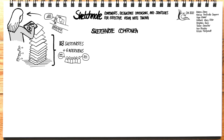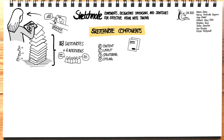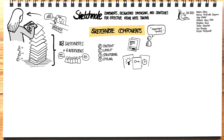Sketchnotes are composed of elements in four categories: content, layout, structuring, and styling. The level of detail of written text ranges from full sentences all the way to catchphrases or key terms, and can also include quotes or speech bubbles emphasizing important parts. What makes sketchnotes different from traditional written notes is the presence of graphical content to supplement the text. Most sketchnotes therefore contain symbols or pictograms, such as objects, signs, and shapes as annotations or to represent important concepts.